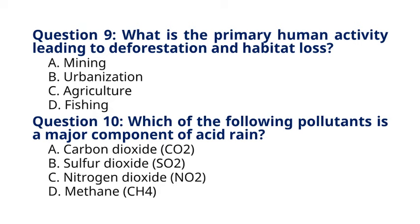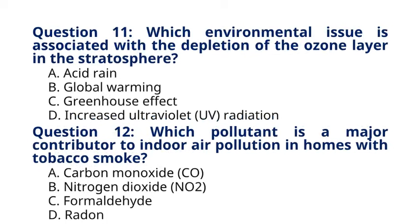Question 11. Which environmental issue is associated with the depletion of the ozone layer in the stratosphere? A. Acid rain. B. Global warming. C. Greenhouse effect. D. Increased ultraviolet, UV, radiation. The correct answer to question 11 is option D. Increased ultraviolet, UV, radiation. Explanation: depletion of the ozone layer in the stratosphere leads to increased penetration of harmful ultraviolet, UV, radiation from the sun, posing risks to human health and ecosystems.